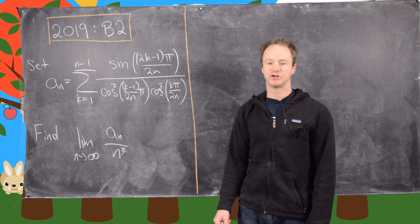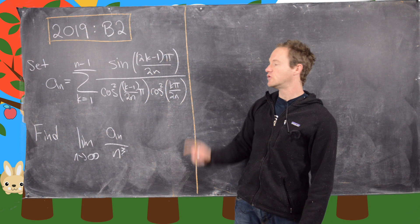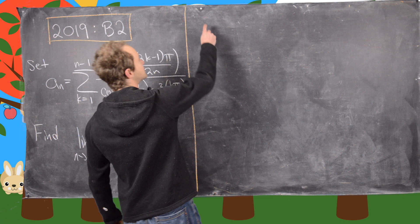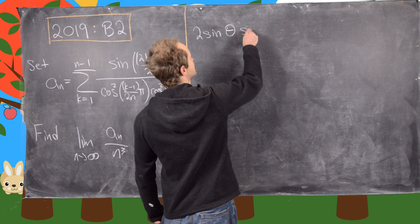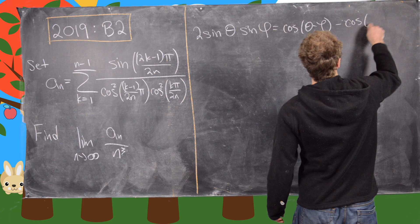Before we get started, let's talk about the strategy. The strategy is going to be to use some trigonometric identities to rewrite the numerator in a way so that we cancel parts of the denominator and come up with a telescoping series. The first identity we'll use is: 2 sin θ · sin φ = cos(θ − φ) − cos(θ + φ).